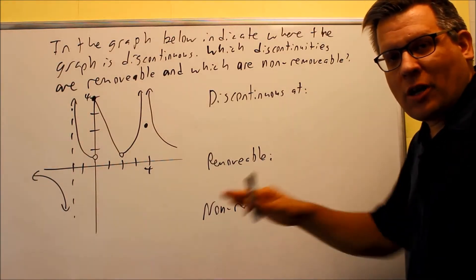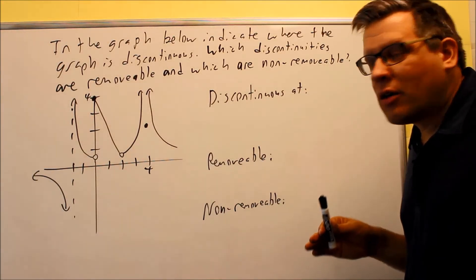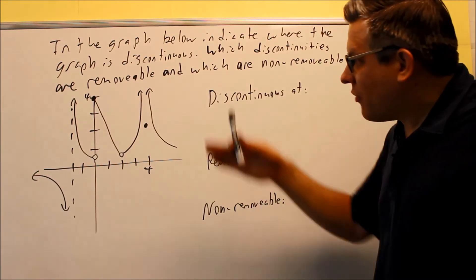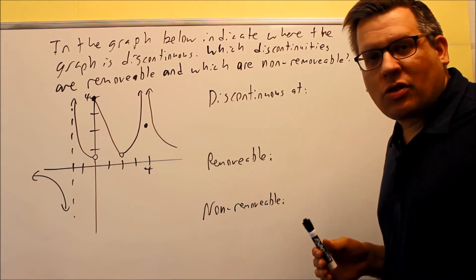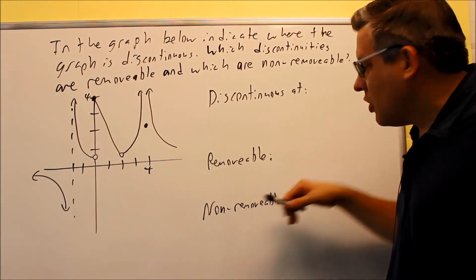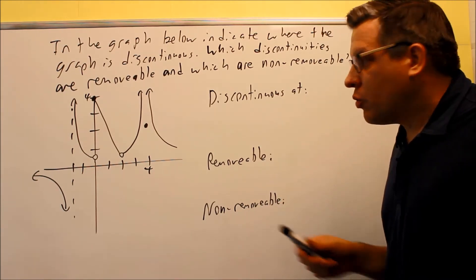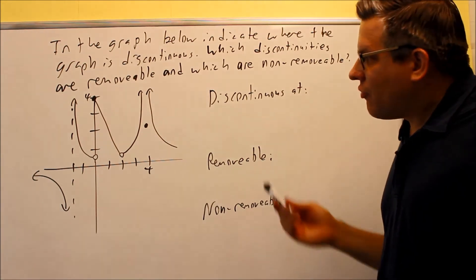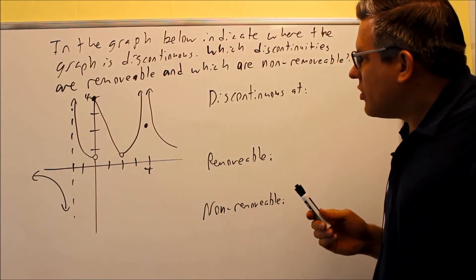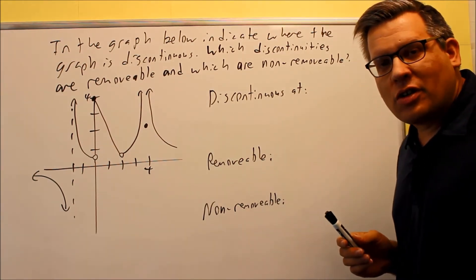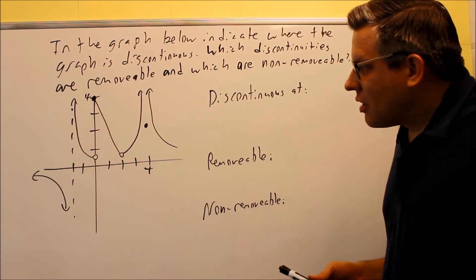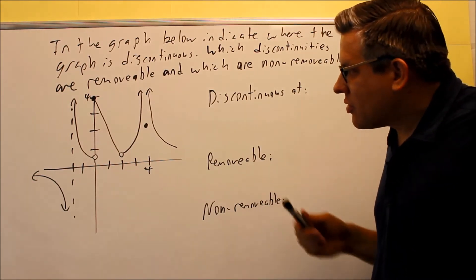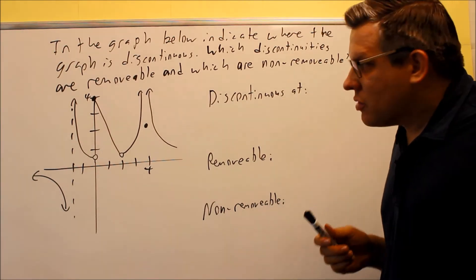Now we're going to do an example that puts together everything we've just been talking about. We're going to identify places where the graph is discontinuous, and then label those discontinuities as removable or non-removable, based on the graph given. We want to identify any place where the graph is discontinuous — that occurs when there's a break or a hole in the graph.